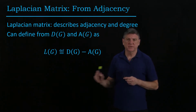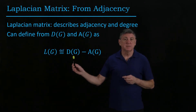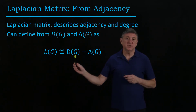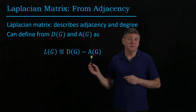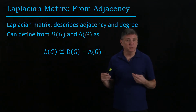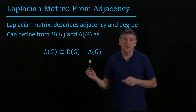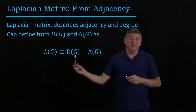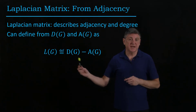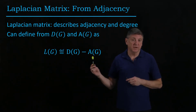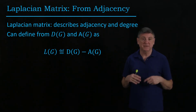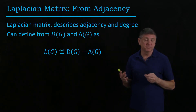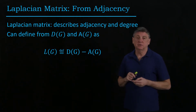Let's make two observations before we continue. The first is that by construction the degree matrix has entries only on the diagonal, and by construction the diagonal entries of the adjacency matrix are always zero because we're not permitting loops in our graphs. That means the Laplacian matrix could be a sparse matrix with a lot of zeros, or it could be a full matrix where very few entries are zero.